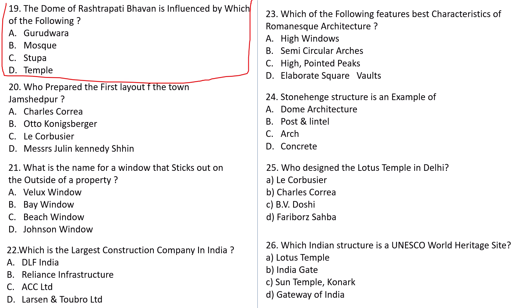Question number 20: Who prepared the first layout of the town of Jamshedpur? A: Charles Correa, B: Otto Koenigsberger, C: Le Corbusier, D: Kennedy Shin. The correct answer — the first layout of Jamshedpur was made by Otto Koenigsberger.